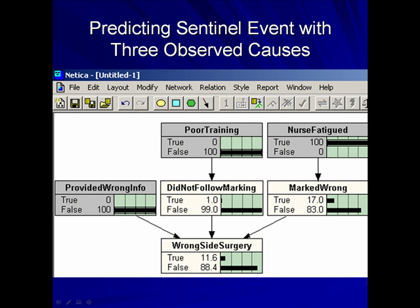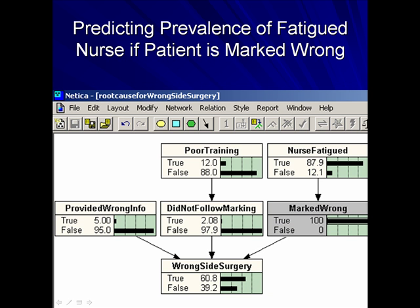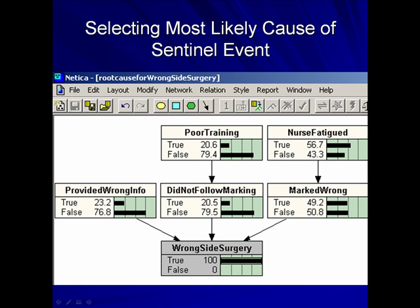In this slide, you see what we are predicting the sentinel event with three observed causes: providing wrong information, poor training, and nurse fatigue. Here, we are predicting the prevalence of a fatigued nurse if the patient is marked wrong. Here, we are selecting the most likely cause of the sentinel event.